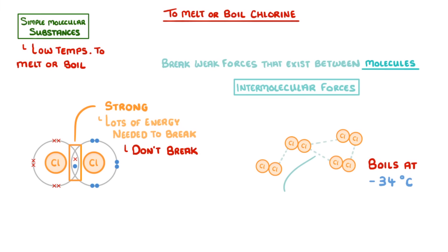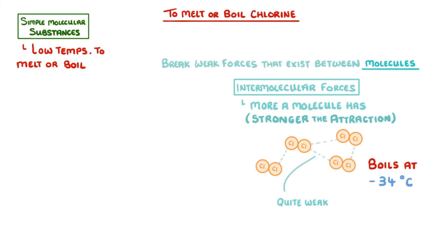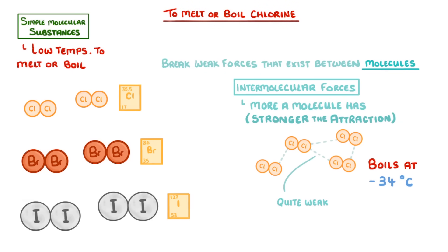Although these intermolecular forces are individually quite weak, the more of them that a molecule has, the stronger the overall attraction is going to be. For example, let's compare the halogens: chlorine, bromine, and iodine. Because we're going down the group, the atoms and thus molecules are getting bigger, so there will be more intermolecular forces between them. This in turn means that more energy will be required to break them all. So the melting and boiling points should increase as you go down the group, which they do.